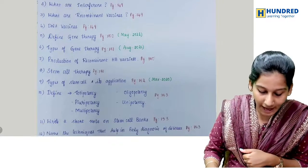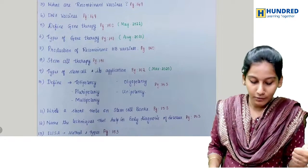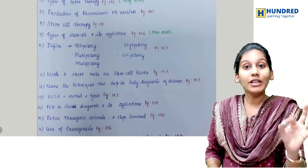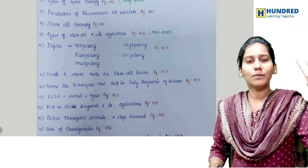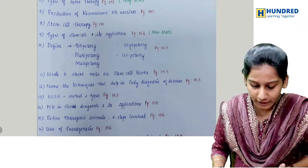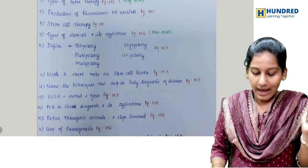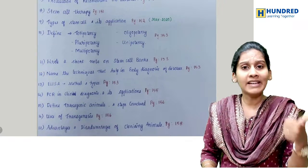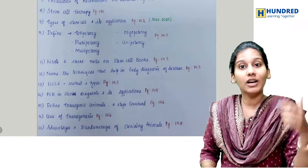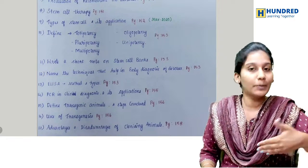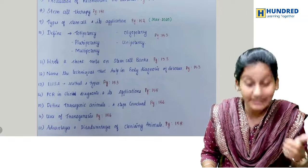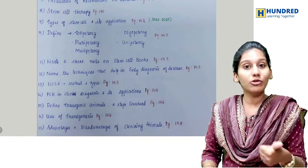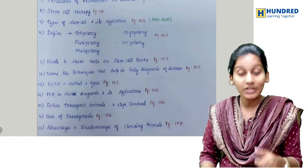And then, recombinant HP vaccine production, stem cell therapy, and very importantly the definitions: totipotency, pluripotency, oligopotency, stem cell banks, and ELISA — the procedure, applications, and types — and PCR clinical diagnosis and application.